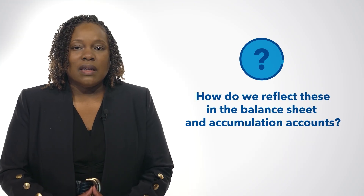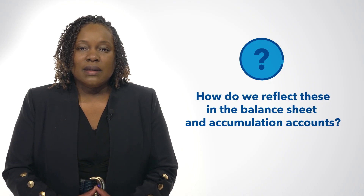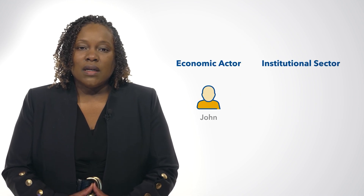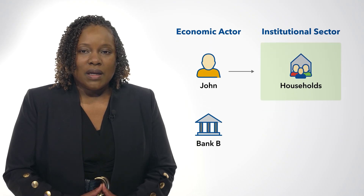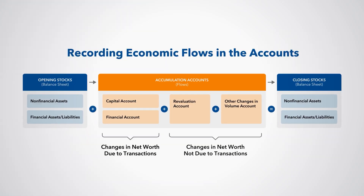How do we reflect these activities in the balance sheet and accumulation accounts for the period? First, let's review the classification of these economic actors to their respective sectors. John's activities are recorded in the household sector, and the activities of Bank B are recorded in the financial corporation sector. John's acquisition of the dwelling and non-financial asset is recorded in the capital account. His down payment, mortgage, and mortgage payments are shown in the financial account. The increased value of his home due to the rising prices is shown in the revaluation account.